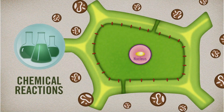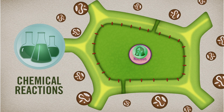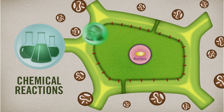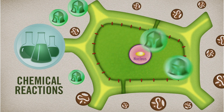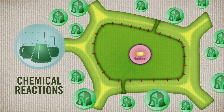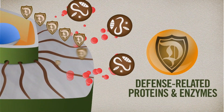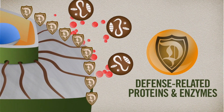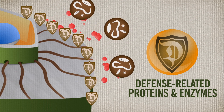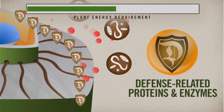Chemical defenses provide plants with powerful antifungal and antibiotic compounds such as phytoalexins. These defense compounds disrupt the pathogen's metabolism or cell structure, protecting the plant from infection. Defense-related proteins help to strengthen the plant's cell wall while inhibiting fungal and bacterial growth by degrading the cell walls of invading organisms.